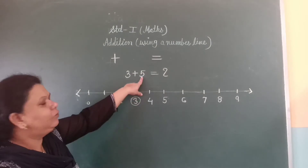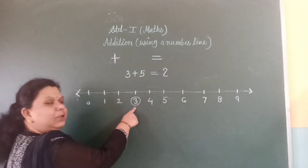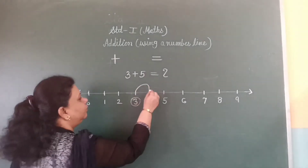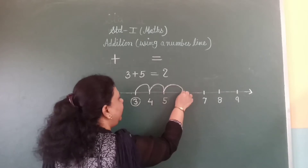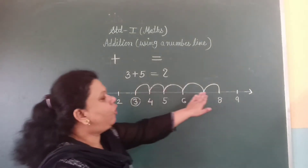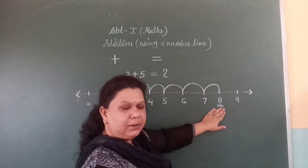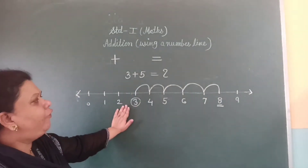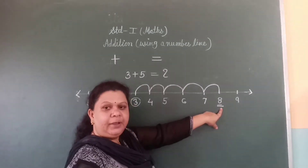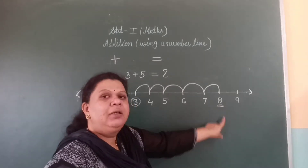To add 5, take 5 forward jumps from 3. Jump 1, 2, 3, 4, 5. 5 forward jumps. The number you land on is the answer. Here, after taking 5 forward jumps from 3, we land on number 8.